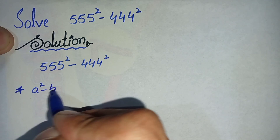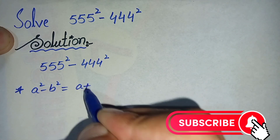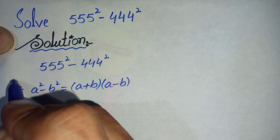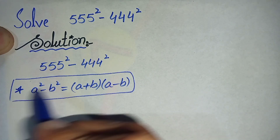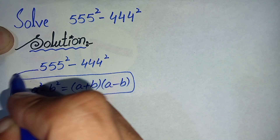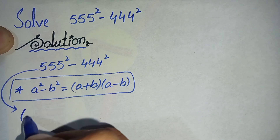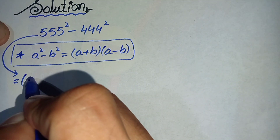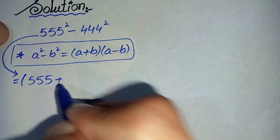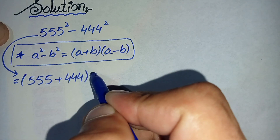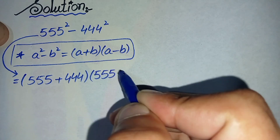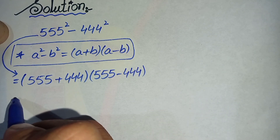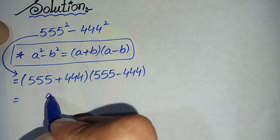For the first method, we will use an algebraic identity: a² minus b² is equal to (a+b)(a-b). Using this algebraic identity, we can write this equation as 555 plus 444, times 555 minus 444.